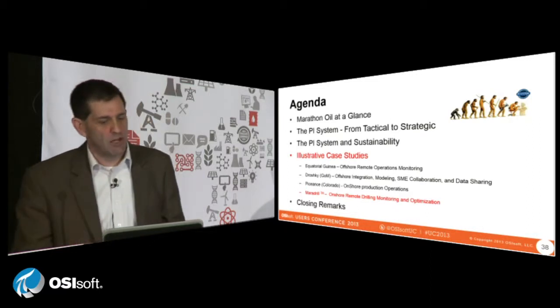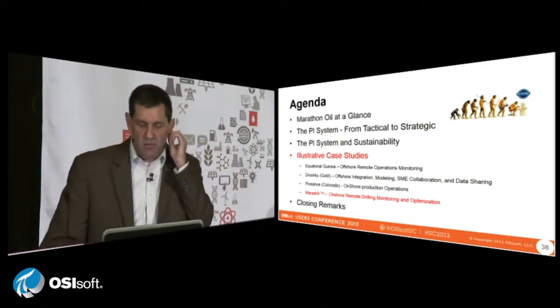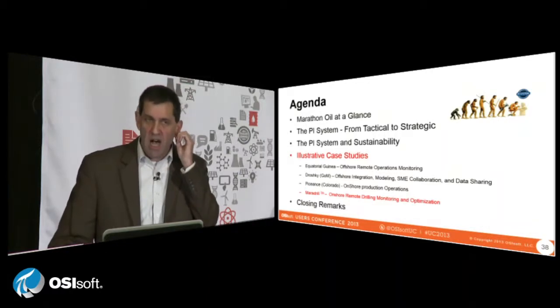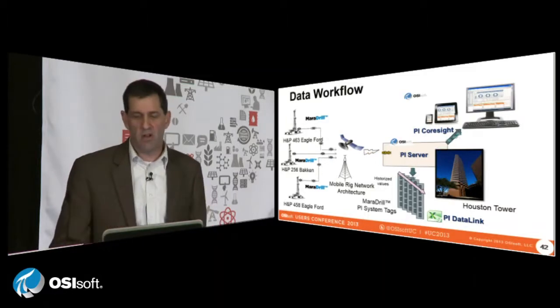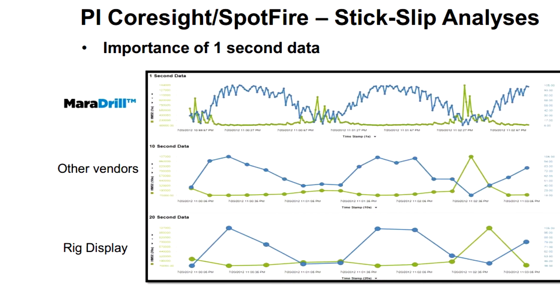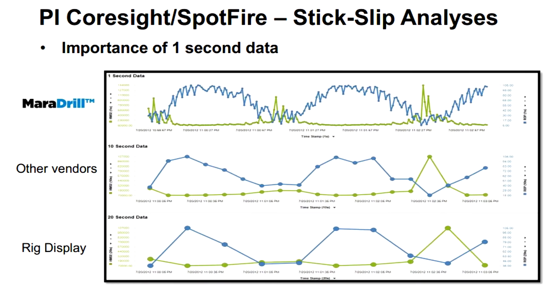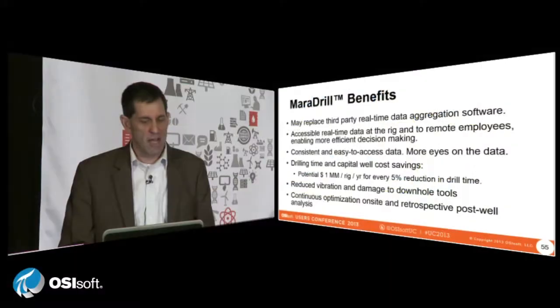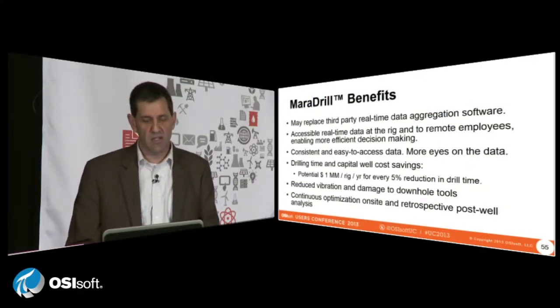The last use case I want to talk about is something I'm really excited about — Meridrill, which is our first use of Pi for drilling. We're able to view the data in Pi Core Site both on laptop PCs and on iPads. With Core Site and Meridrill, we were able to get a 40% sustained increase in the rate of penetration. There's a potential $1 million per rig per year in savings.